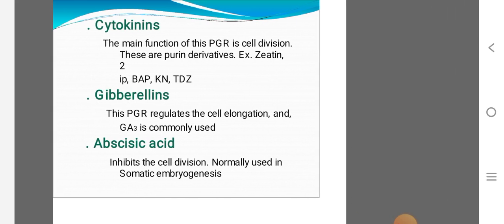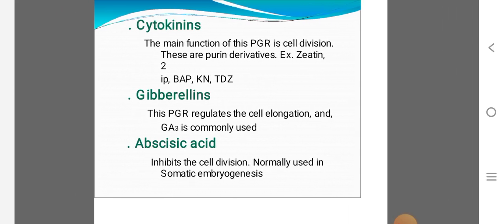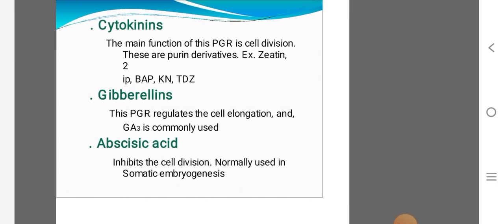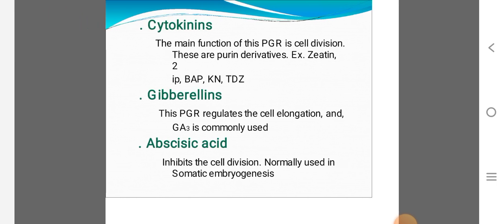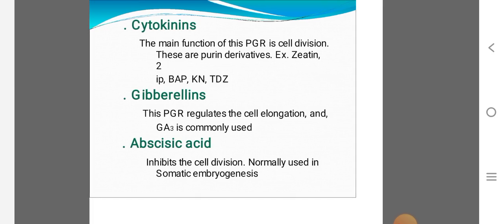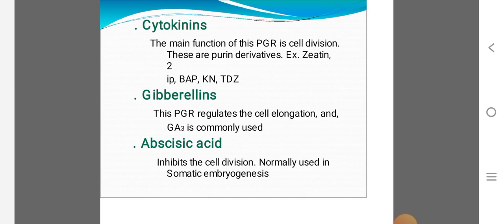Gibberellin, it is a plant growth regulator for cell elongation. Next, abscisic acid, it inhibits the cell division, normally used in the somatic embryogenesis.